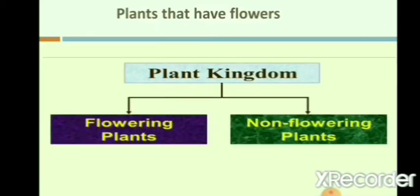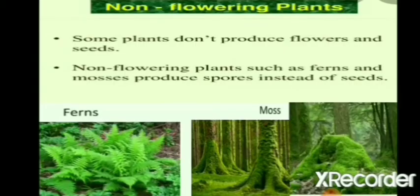Plants are categorized into two types: flowering plants and non-flowering plants. Plants that have flowers are known as flowering plants. For example, rose, jasmine, tulip, lotus, etc. Plants that do not produce flowers and seeds are called non-flowering plants. For example, ferns, mushroom, pine, etc.